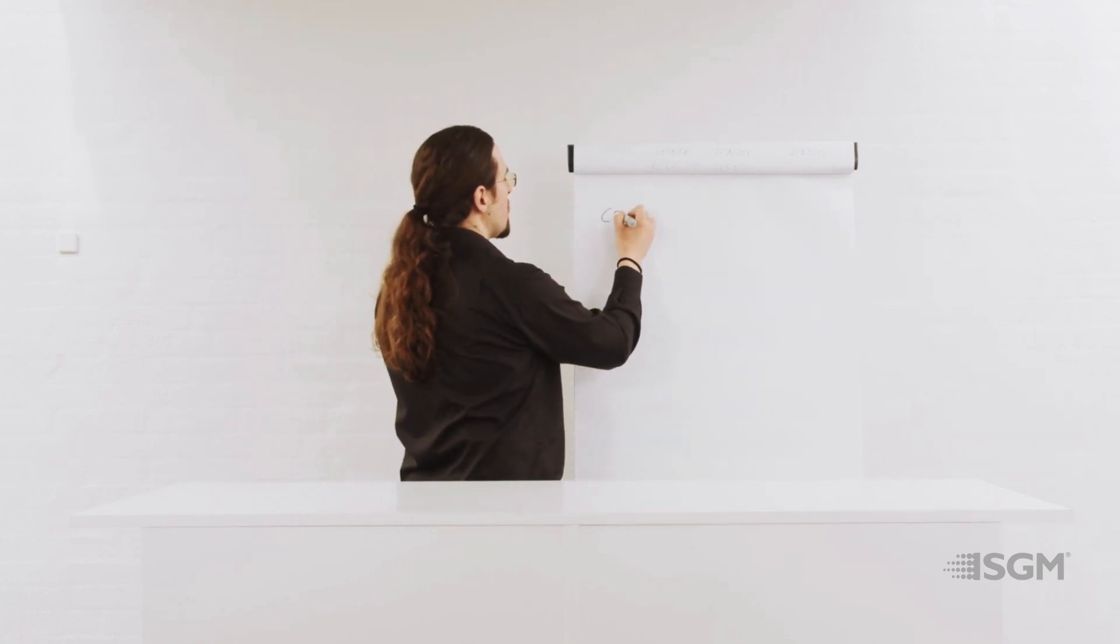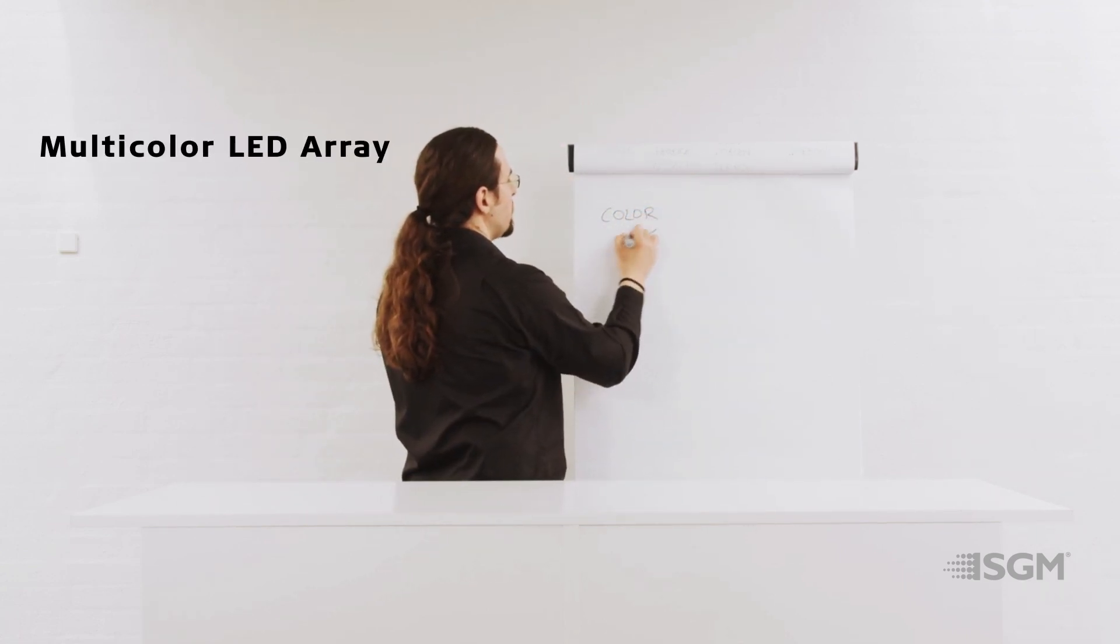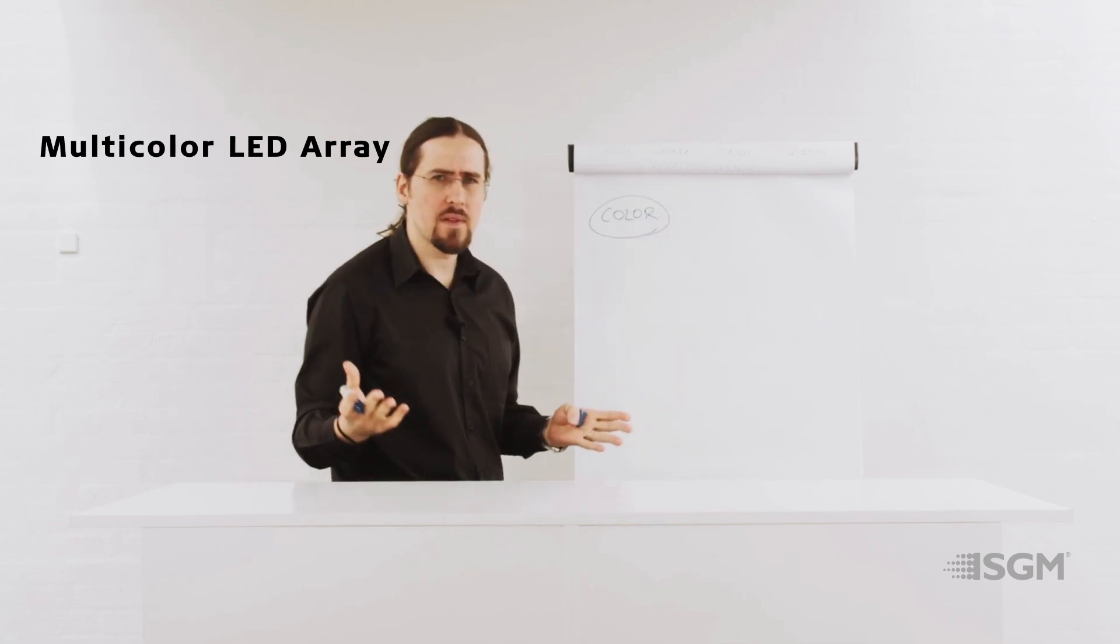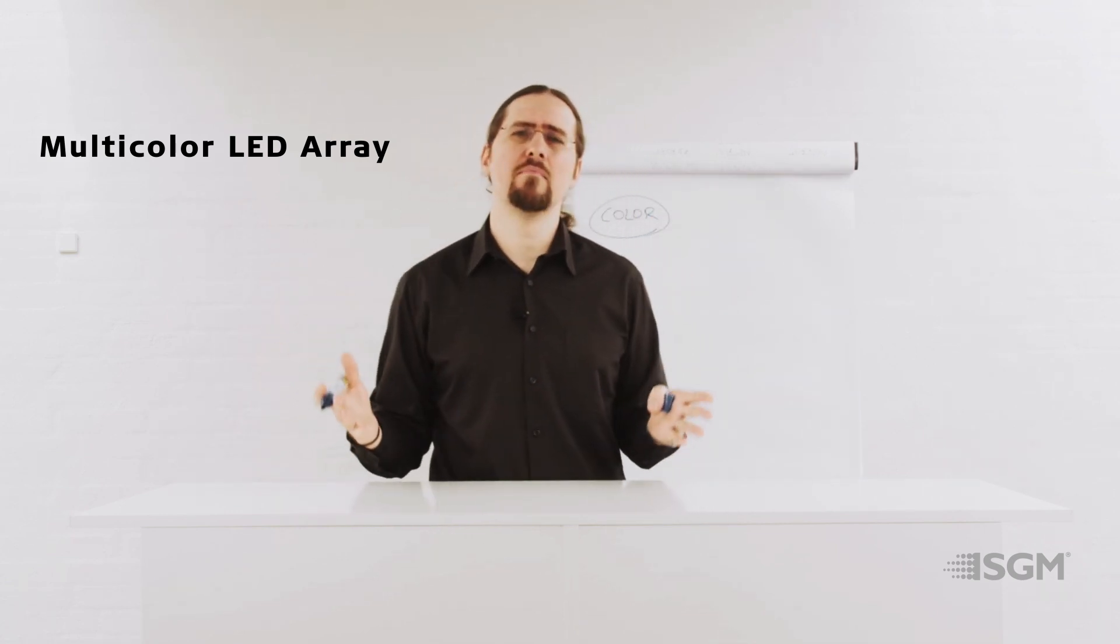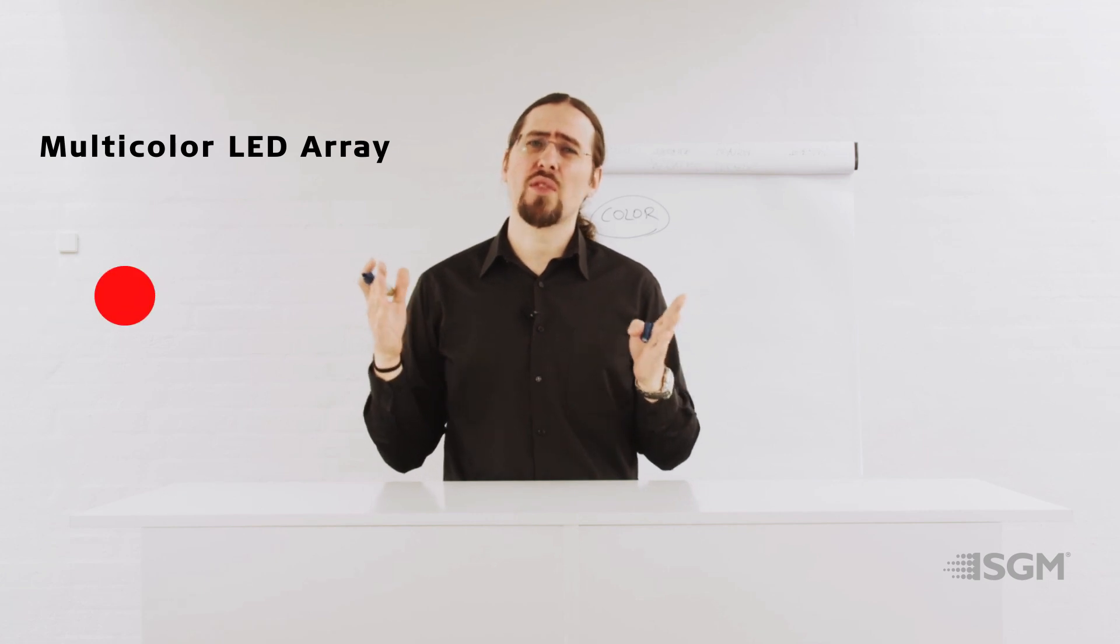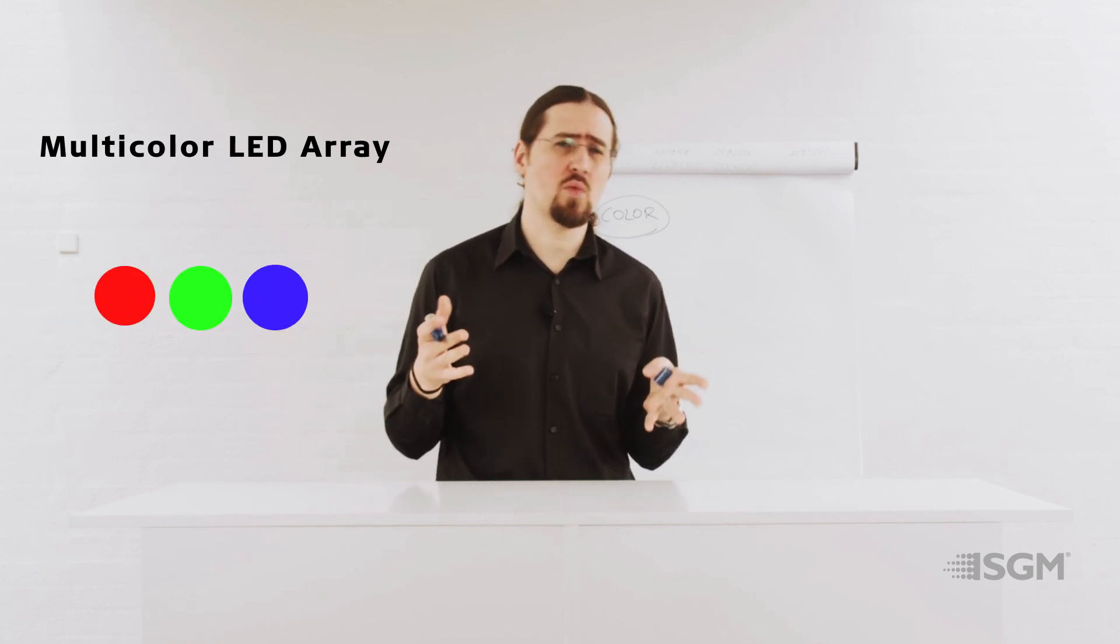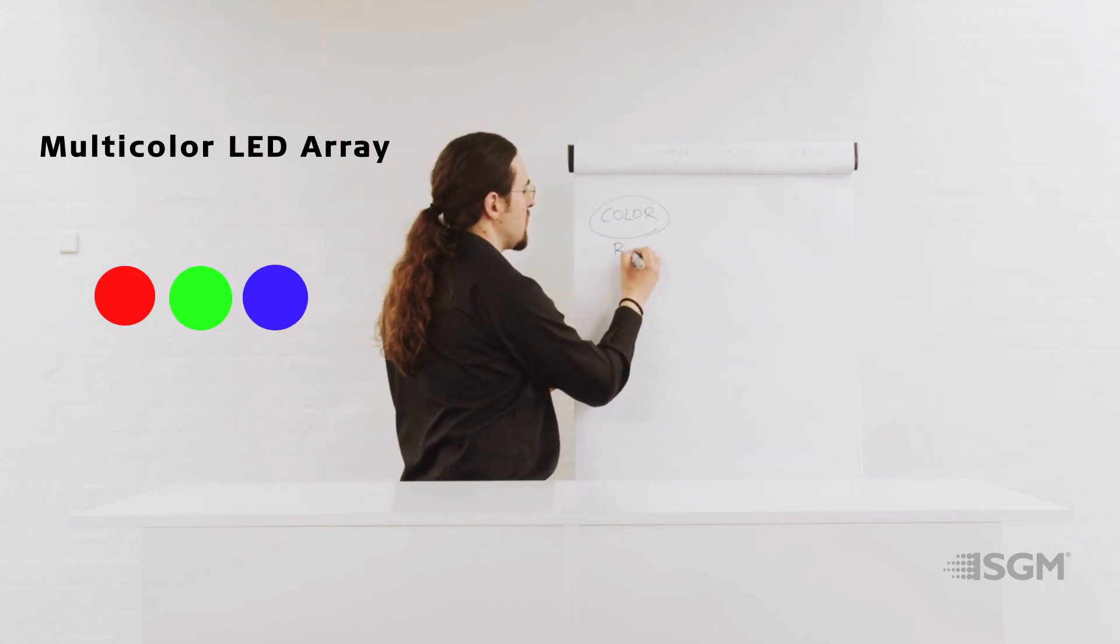So let's explain a bit about it. So the first thing that we are going to discuss is color, right? So the color arrays are all of them based on red, green, and blue LEDs, what we normally call RGB.